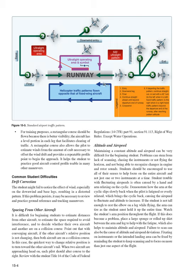Spacing from other aircraft: it is difficult for beginning students to estimate distances from other aircraft, estimate the space required to avoid interference, and decide whether their own aircraft and another are on a collision course. Point out that with converging aircraft, if the other aircraft's relative position is not changing, both aircraft are on a collision course. The quickest way to change relative position is to turn toward the other aircraft's tail. When two aircraft are approaching head-on, each pilot should alter course to the right. Review with the student 14 CFR Part 91, Section 91.113, right-of-way rules.